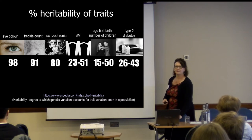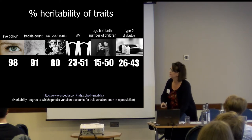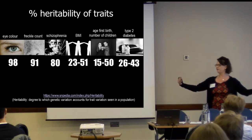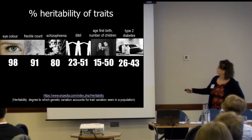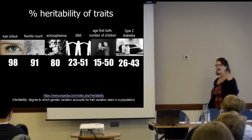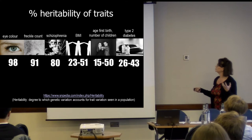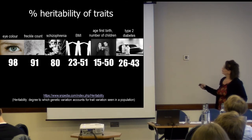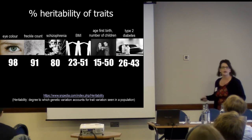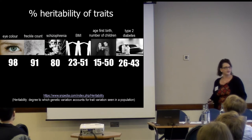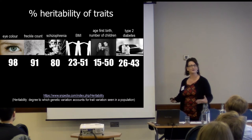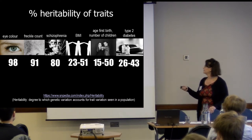We can think about heritability of traits. There's a really broad difference in what has a genetic basis, and this is based on SNP heritability — whole genome data. Things such as eye color, freckles, and height have a strong genetic basis. But as we get further into complex traits — age at first birth, number of children, type 2 diabetes, BMI — we see larger confidence intervals and a lower genetic basis. We'll continue talking about why that is.